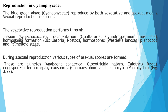Reproduction in Cyanophyceae: blue-green algae reproduce both vegetatively and by asexual means, as sexual reproduction is absent. Vegetative reproduction occurs through fission in Synechococcus, fragmentation in Oscillatoria, Cylindrospermum, and Microcoleus, hormogonia formation in Oscillatoria and Nostoc, hormospores in Westiella lanosa, and planococcoid and palmelloid stages.